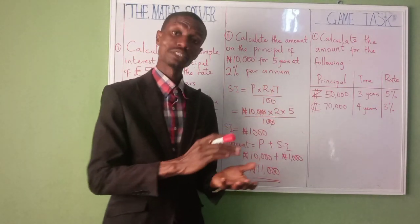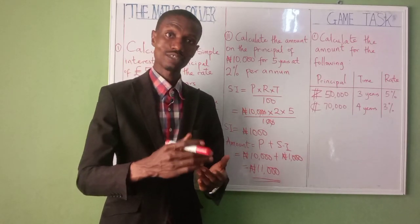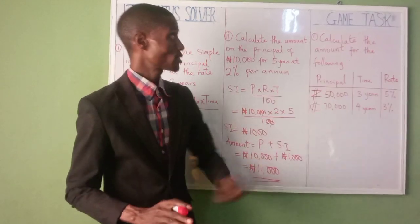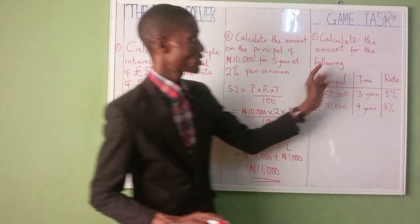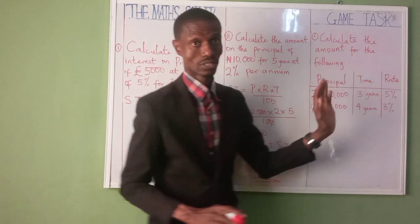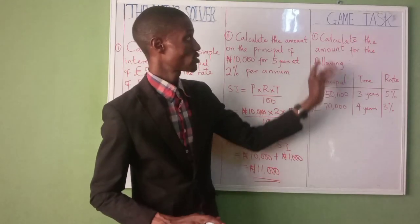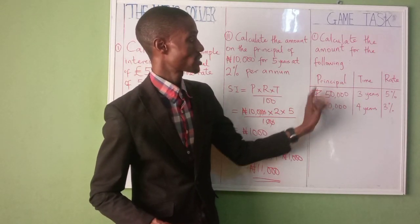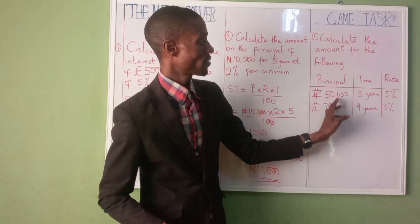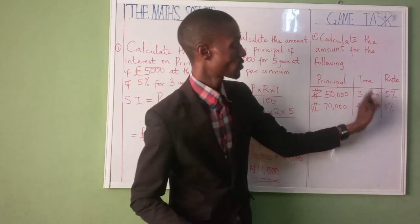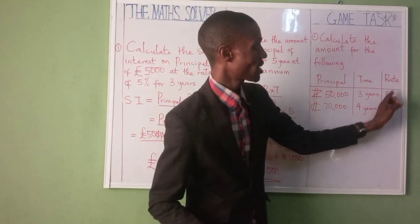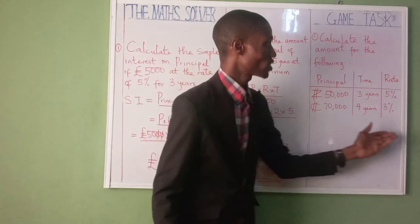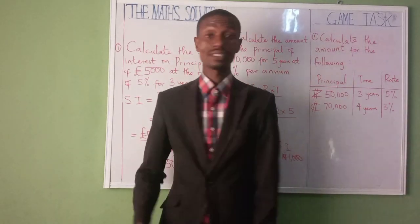For the amount, just calculate the simple interest, add it together with the principal, and that's it — it's as simple as that. Now try this: you have to calculate the amount. The first one has a principal of 50,000 for 3 years at 5%, and the second one is 7,000 for 4 years at 30%.